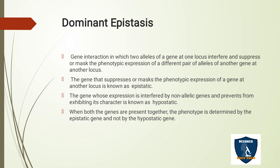The gene which suppresses another gene is called the epistatic gene, and the gene which is suppressed is called the hypostatic gene. The teacher is the epistatic gene and the students are the hypostatic gene. When both genes are present together, the phenotype is determined by the epistatic gene, not by the hypostatic gene.